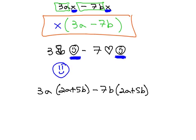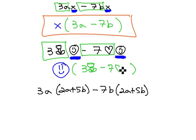Smiley face, the common factor, comes out front, and what's left, 3 tulip minus 7 heart, is what remains inside the parentheses.